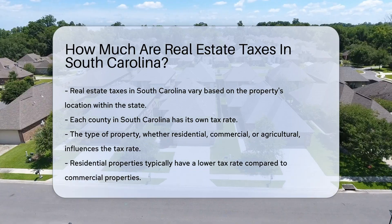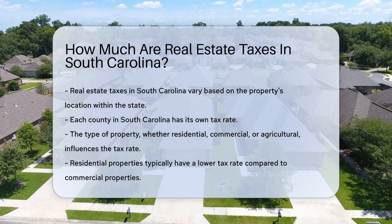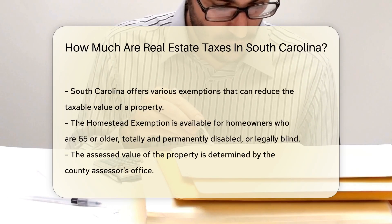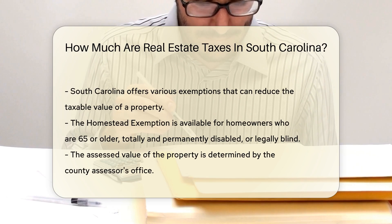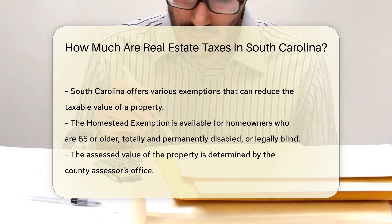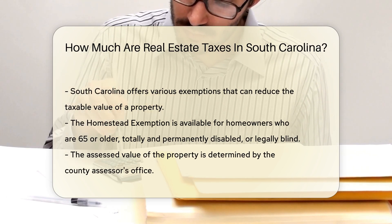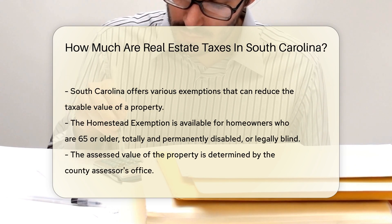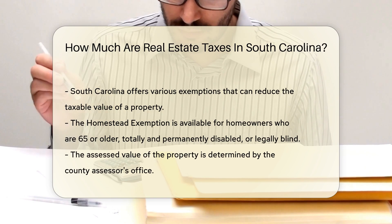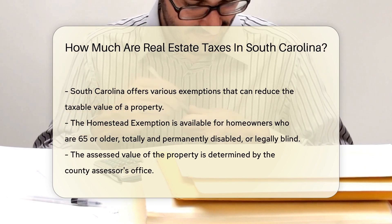Residential properties typically have a lower tax rate compared to commercial properties. South Carolina also offers various exemptions that can reduce the taxable value of a property. For instance, the homestead exemption is available for homeowners who are 65 or older, totally and permanently disabled, or legally blind.